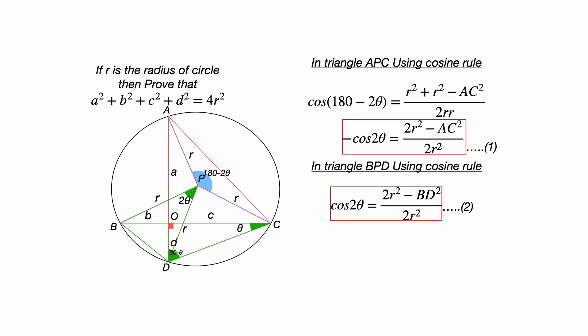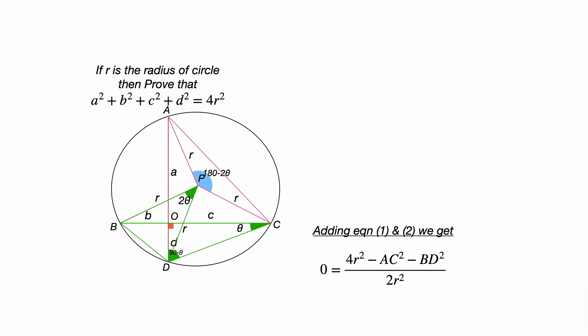Now, if we see equation number 1 and equation number 2, we can add them. If we add them, in the LHS, I would be getting 0 and equal to (4r² - AC² - BD²) / 2r². In the denominator, 2r² will be multiplied with 0 in the left-hand side. That would be cancelled. So, 4r² - AC² - BD² = 0. That will give you AC² + BD² = 4r².